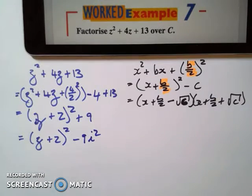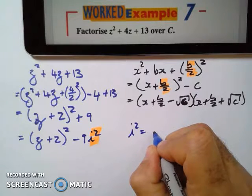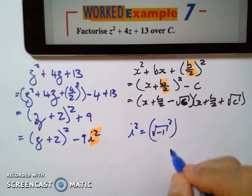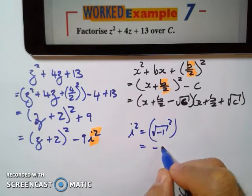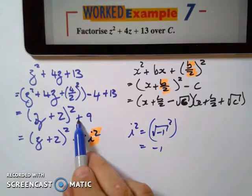Remember, I'm going to say i squared equals the square root of negative 1 squared, which equals negative 1. So negative 1 times negative 9 is positive 9.